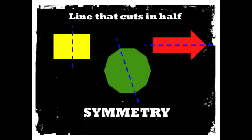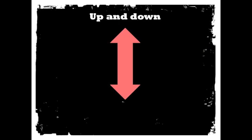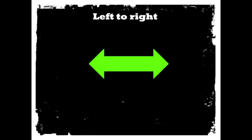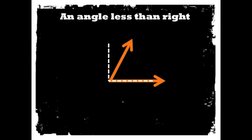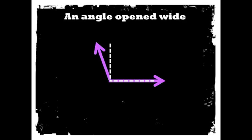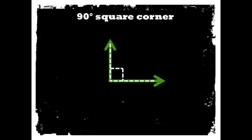Up and down: vertical. Left to right: horizontal. An angle less than right: acute. An angle open wide: obtuse. Ninety degrees square corners: right angle.